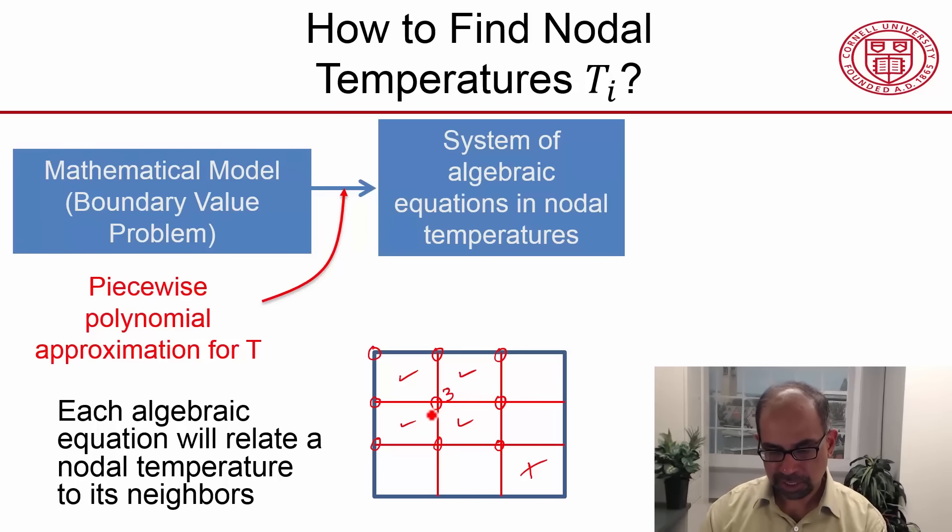And once the solver generates those algebraic equations, it thinks of it in matrix form. The temperature vector, for instance, in this case will have 16 temperature values. So this will be a vector with 16 rows and one column. The stiffness matrix will be a 16 by 16 matrix, and so on.